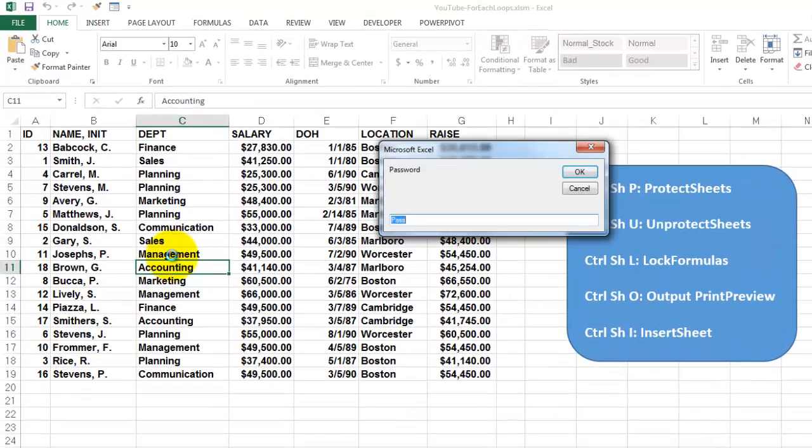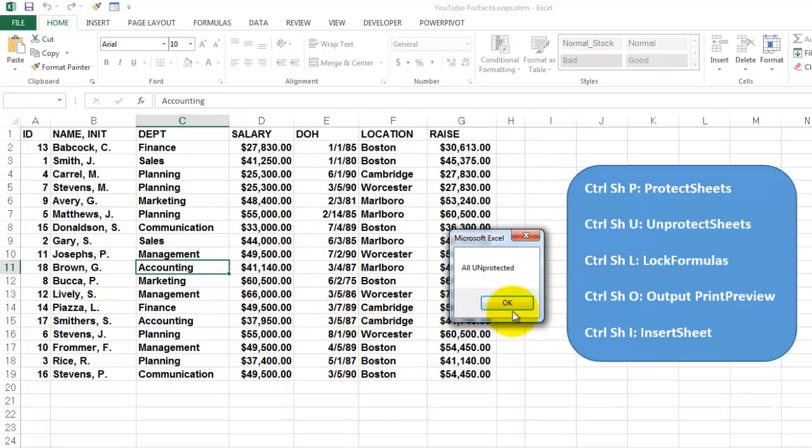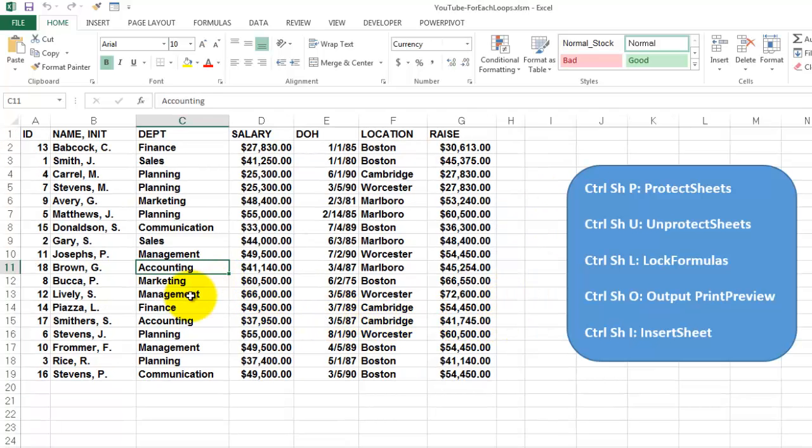If I do Ctrl-Shift-U, I have to know the password. If I change this, it will not let me do anything. It will say it was the wrong password. I'm going to accept the password. All the sheets are unprotected now. So now I can change anything I want. If I change that last number into 20, it will accept that.